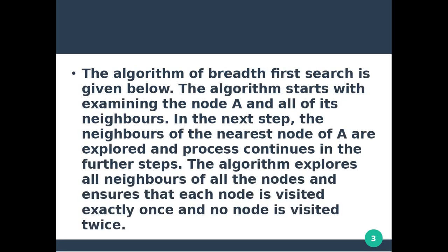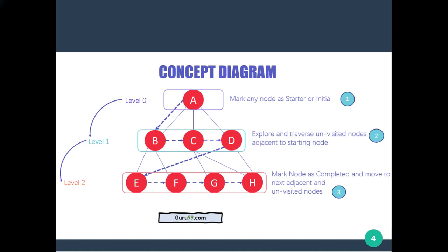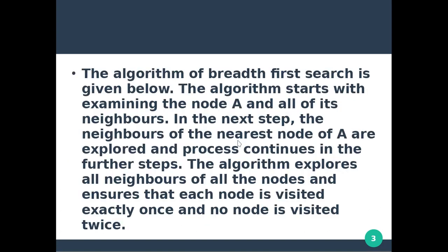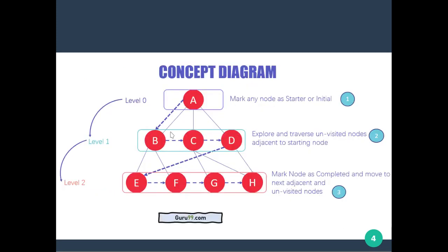The algorithm of Breadth First Search is given below. The algorithm starts with examining node A and all of its neighbors. In the next step, the neighbors of the nearest node are explored and the process continues. We explore and traverse unvisited nodes adjacent to the starting node. The starting node is the initial node, and there is an adjacent node.